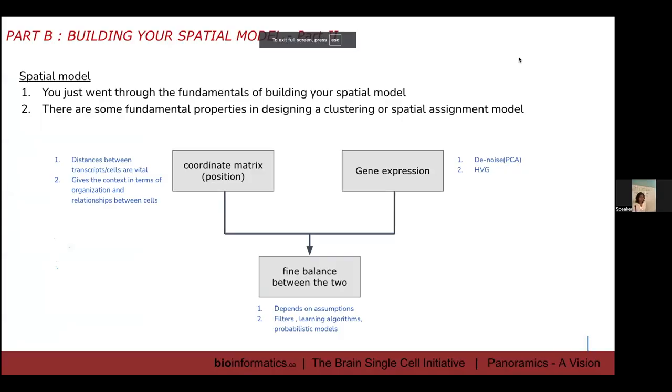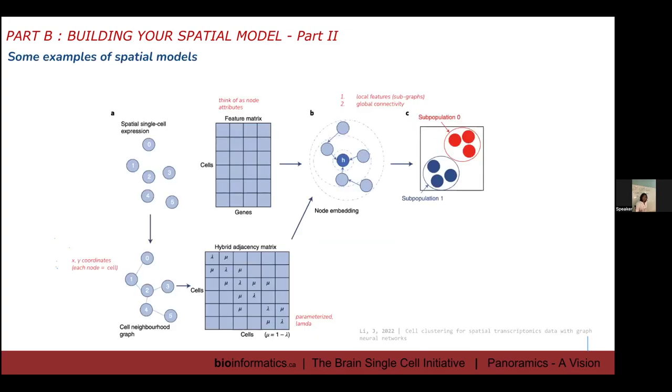So you just went through the really fundamentals of building a spatial model. So the thing is, as much as it seems like it's very complex, it's not. So every single paper, they will use your coordinate matrix. You will need your coordinate matrix that gives you your position and then you have your gene expression. So a gene expression, you can denoise it either with PCA or you can denoise it by selecting for your highly variable genes. But the principle is really the same. And then it's really a fine balance between the two.